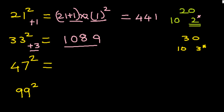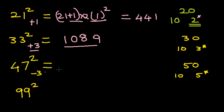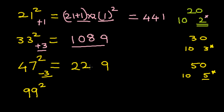Next we select the number 47. Since this number is closer to 50, we select the base as 50. The real base is 10, and 50 divided by 10 gives 5, which is the multiplying factor. First step: 47 minus 50 is minus 3. We square this number — we get 9. Then 47 minus 3 is 44, multiplied by the multiplying factor 5, gives you 220. The answer is 2209.